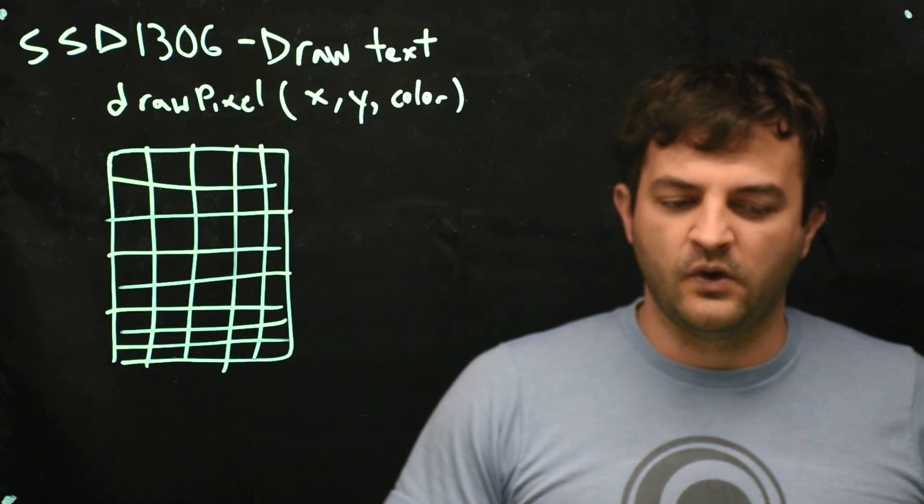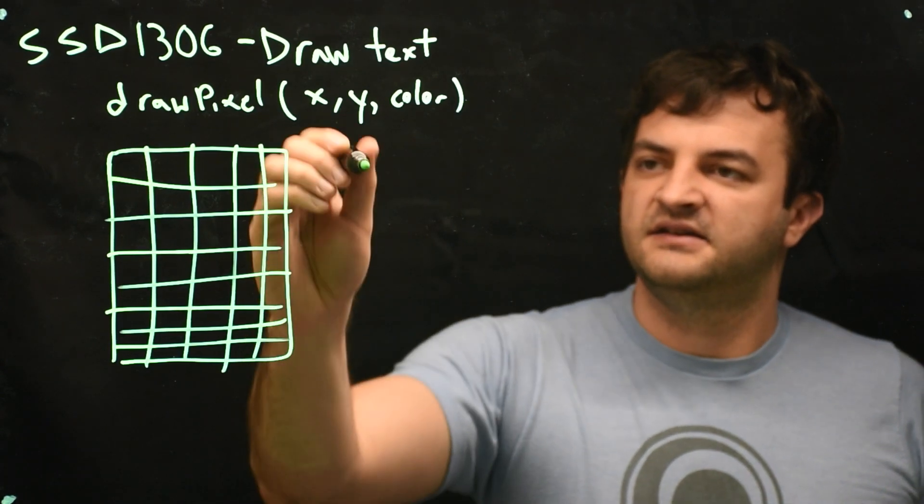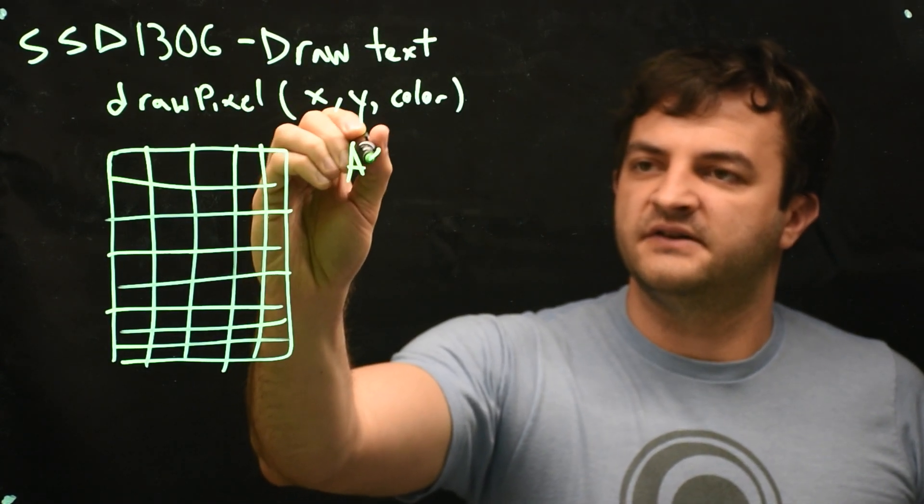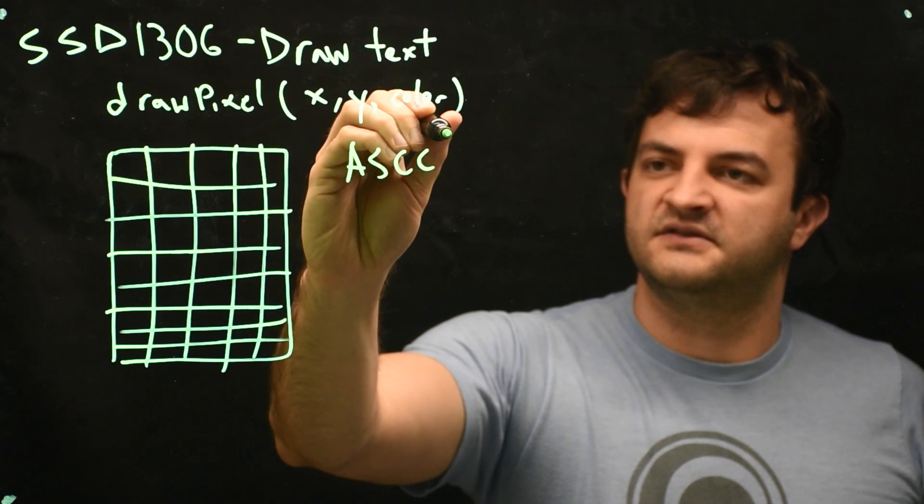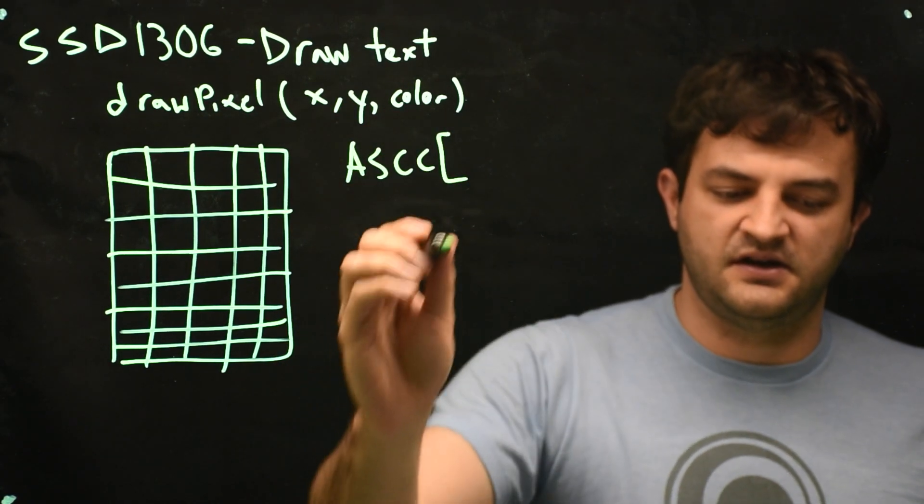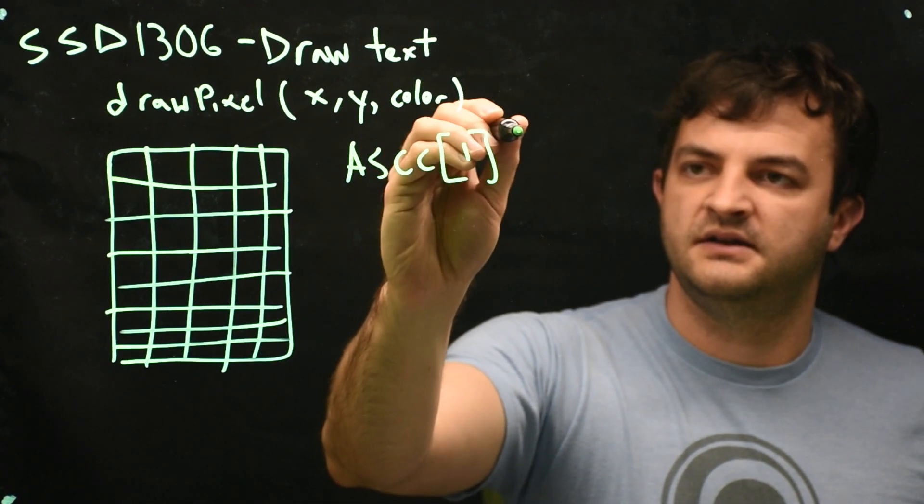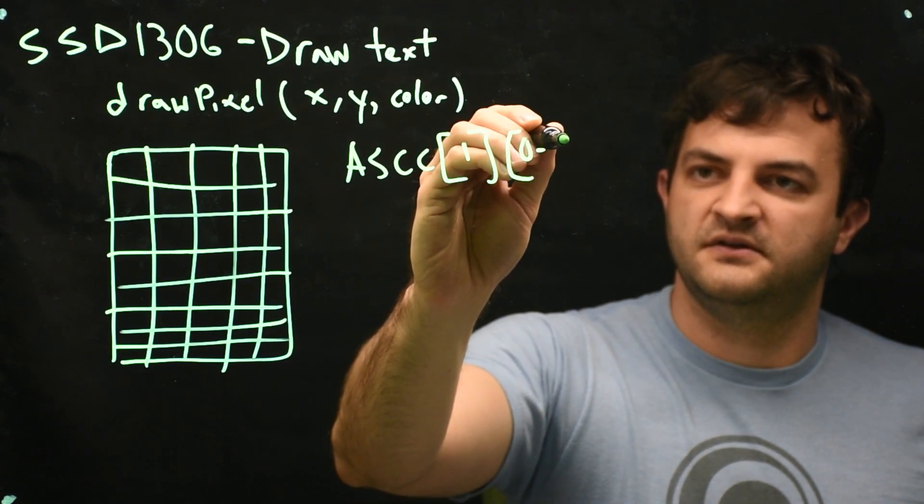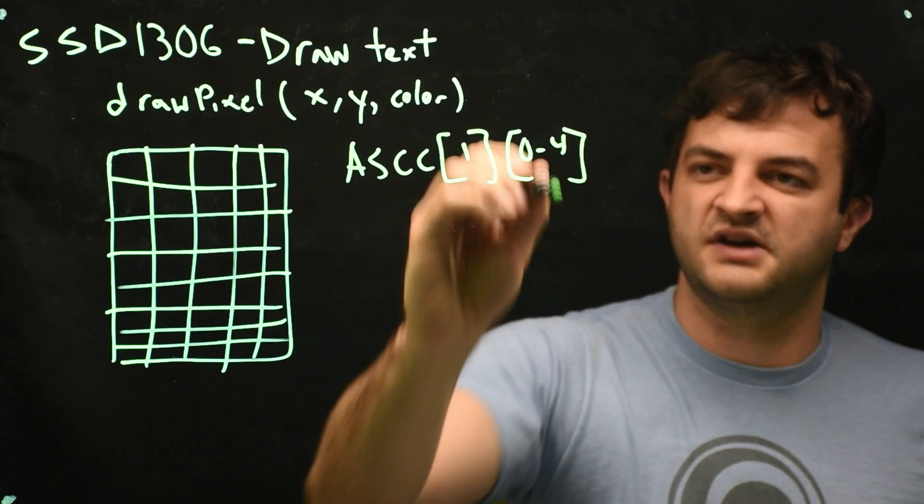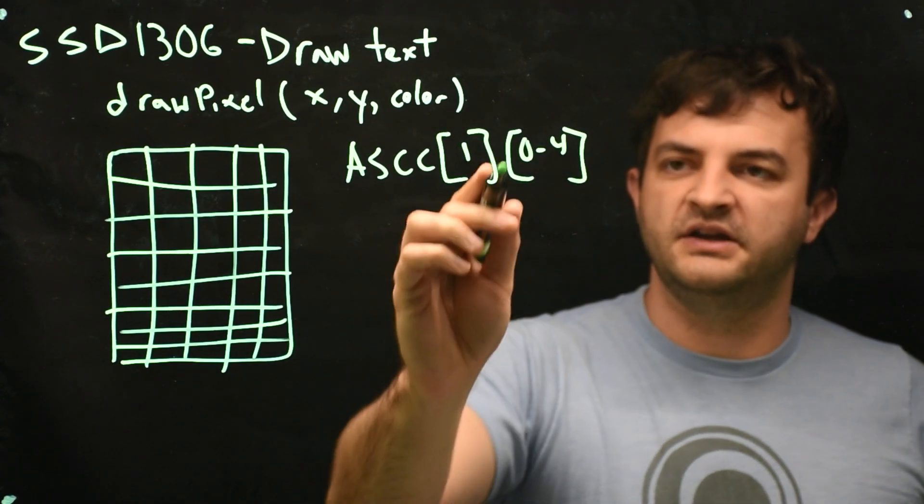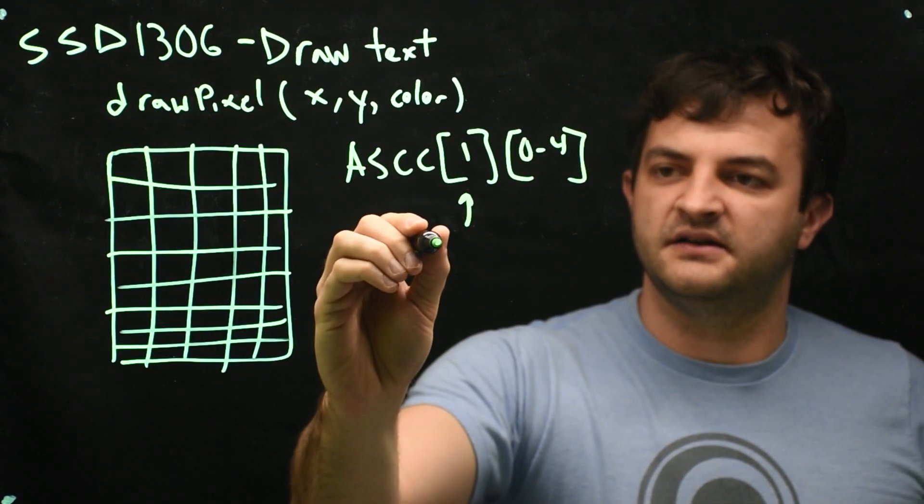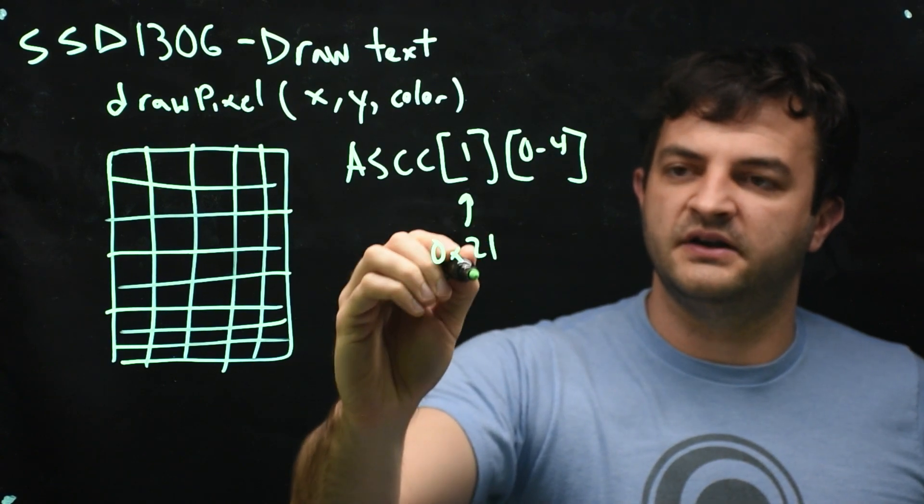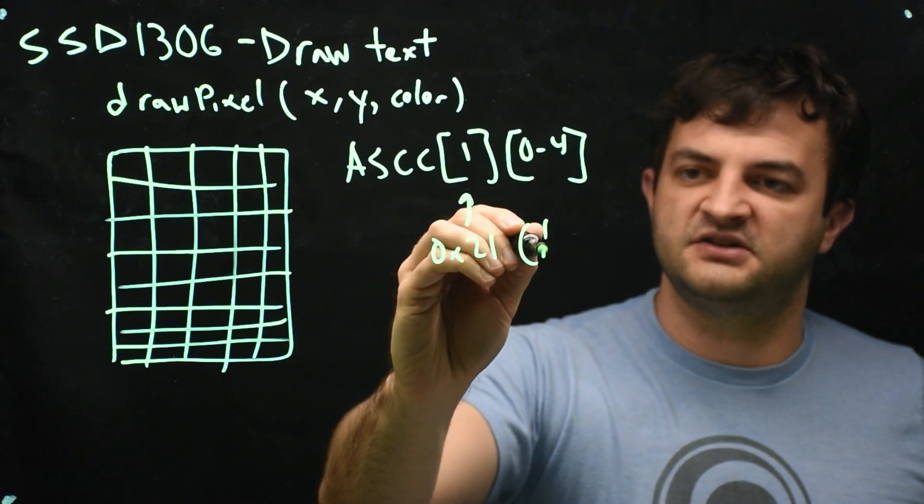So one row of the ASCII variable, so ASCII, for instance, ASCII of 1, 1, and then we have 0 through 4 possible columns. 1 here represents 0x21, which is the exclamation point letter.